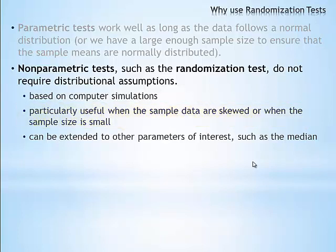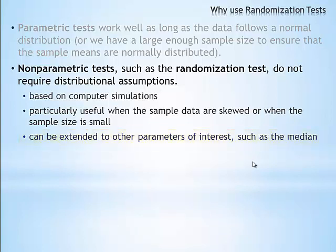In introductory statistics courses, almost all hypothesis tests are based on population means. However, nonparametric tests can also be extended to other parameters of interest, such as the median. The idea of randomization tests is not new. In 1935, top statisticians such as R.A. Fisher stated that randomization tests were typically superior to two-sample t-tests. However, back in 1935, we did not have the computers to conduct these simulation studies, so they used the two-sample t-tests as a reasonable approximation to the randomization tests.